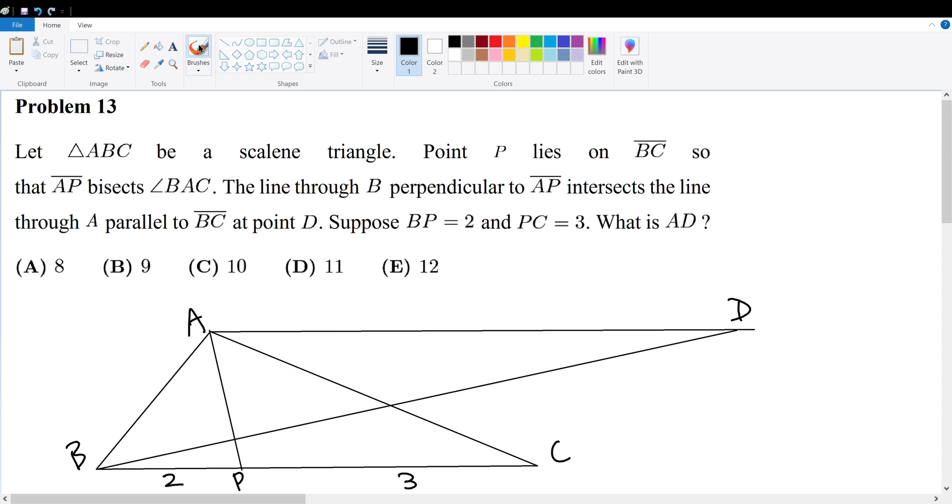Problem 13: Let triangle ABC be a scalene triangle, meaning all angles are distinct. Point P lies on BC so that AP bisects angle BAC. The line through B perpendicular to AP intersects the line through A parallel to BC at point D. Suppose BP equals 2 and PC equals 3. What is AD? So I just drew the shape.